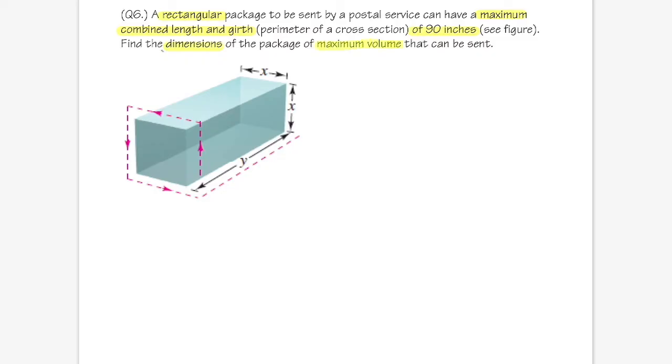Okay, so here we go. We have a picture already, and let's write an equation for this. We want the cross section to be a square, so we have 4x because we must have four sides. We also have to combine this with the length, which is y. So we have 4x + y, and altogether that has to be equal to 90.